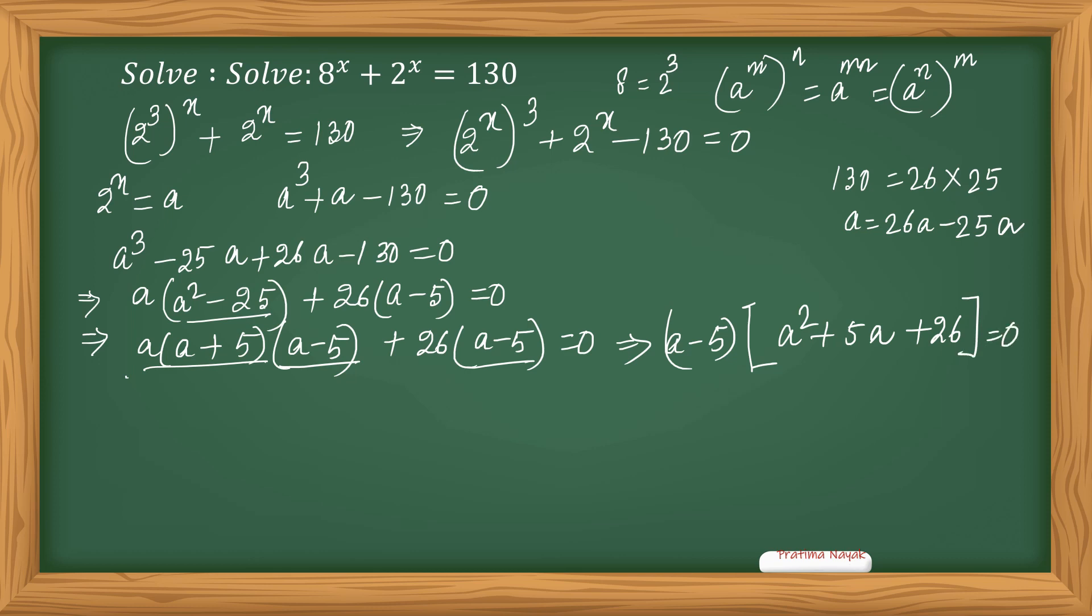So I am getting either a minus 5 equals 0, or a squared plus 5a plus 26 equals 0. The second one, you can split the middle term or find the real roots. But let us take the first one, a equals 5.